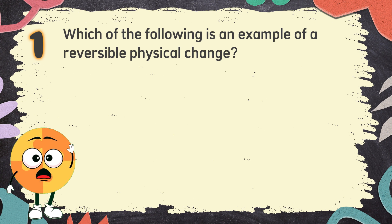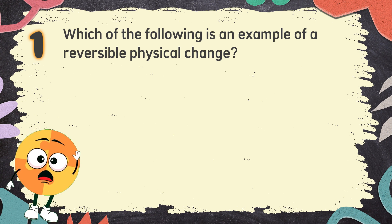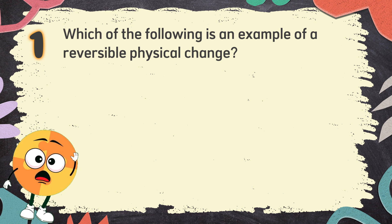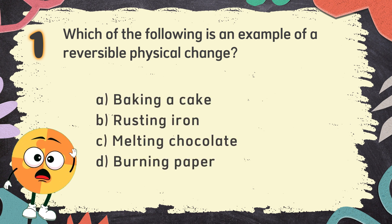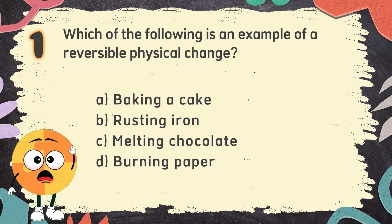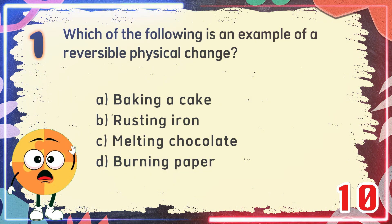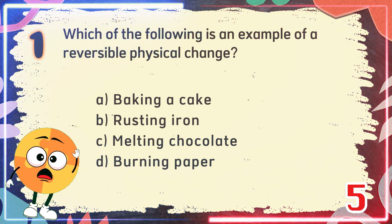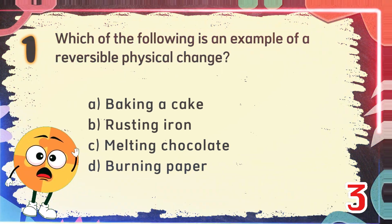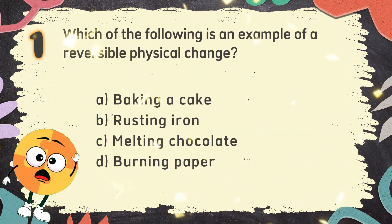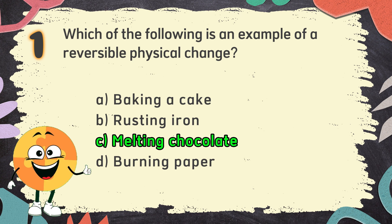Number 1. Which of the following is an example of a reversible physical change? The choices are: A. Baking a cake, B. Rusting iron, C. Melting chocolate, D. Burning paper. The correct answer is C. Melting chocolate.